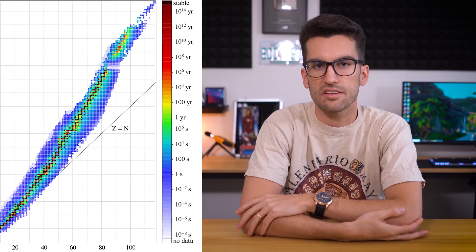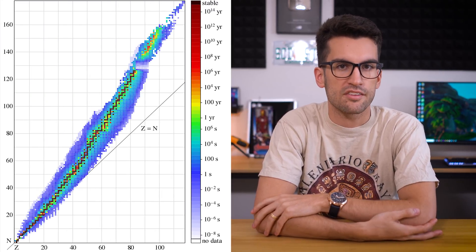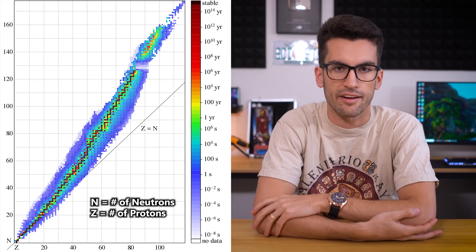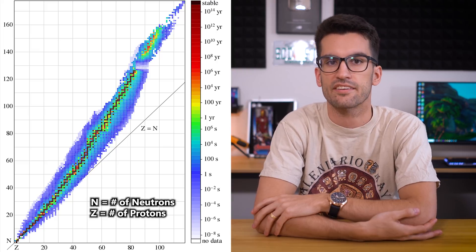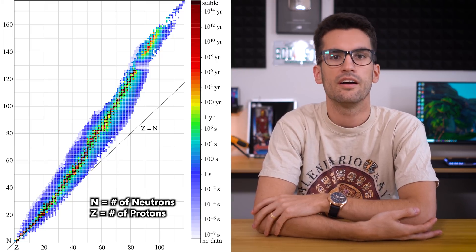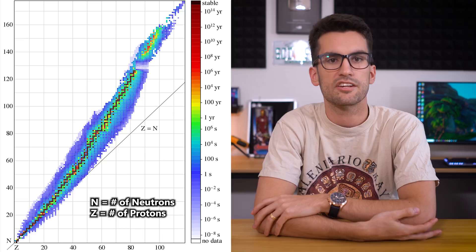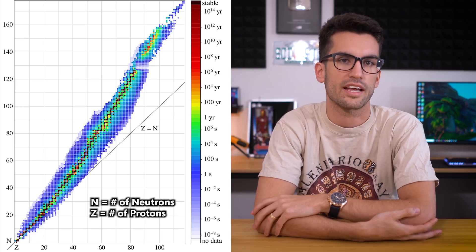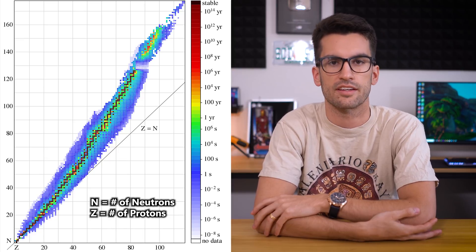Tin is the next element in the carbon group. Its magic atomic number of 50 means it's extremely stable with many isotopes. It doesn't readily oxidize in air, making it a great anti-corrosion applicant for iron-carbon alloys like steel. A historical application was in the production of bronze, which is 1 part tin and 7 parts copper, in case you were wondering.